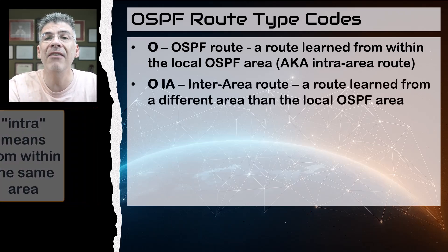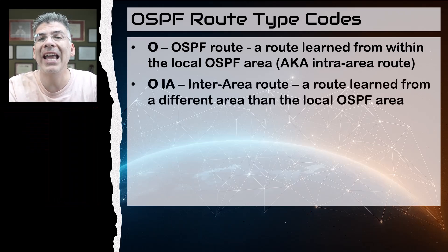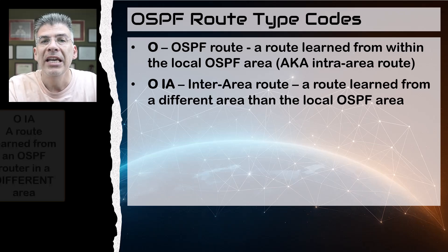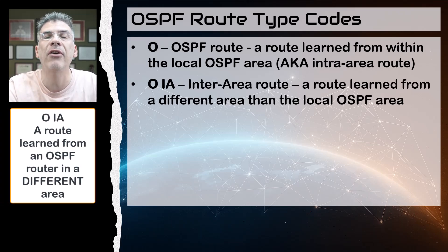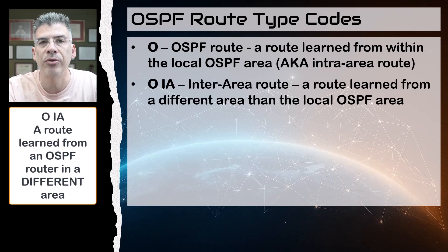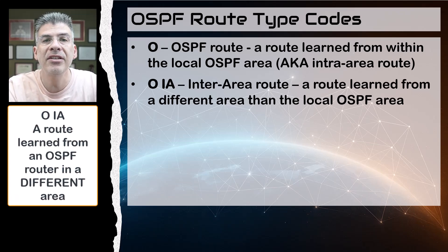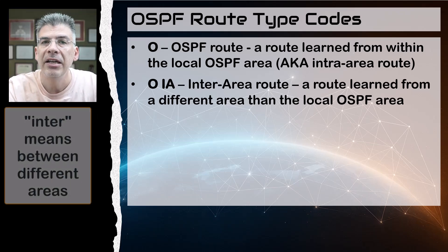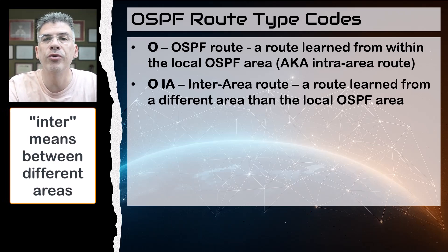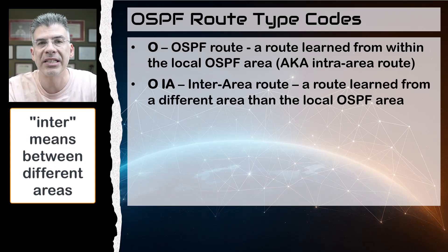Next we have the OIA code. This refers to an inter-area OSPF route — a route that has been learned from a different area than the router whose routing table we're examining.